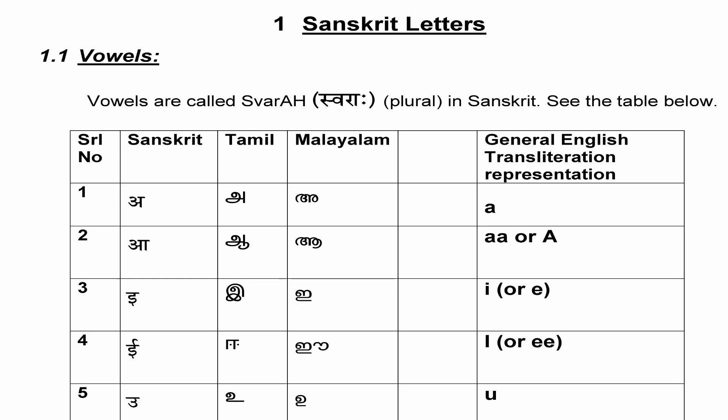To begin with, let us start with the vowels. The vowels are called swara in Sanskrit. Now let us go to the basic letters. There are three basic letters: a, e, and u.